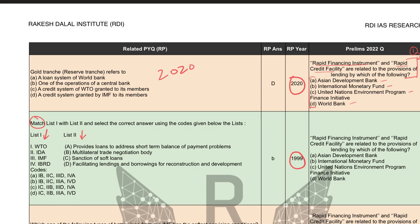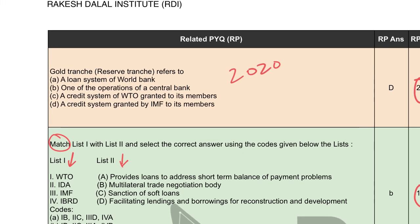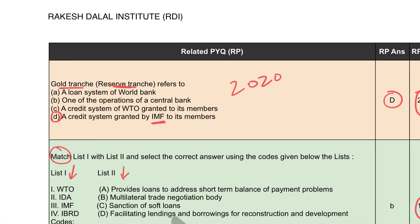In 2020, the question read: 'Gold tranche or reserve tranche — reserve tranche refers to: a loan system of World Bank, one of the operations of a central bank, a credit system of WTO, or a credit system granted by IMF to its members.' The answer to the 2020 question was IMF. We are looking at a loan given by a big international institution, so IMF is the answer. If we have studied this 2020 question, we know that such loan tranches are given by IMF.